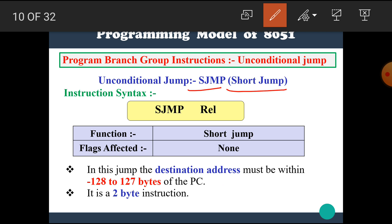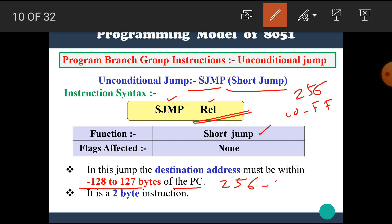The next instruction is SJMP, short jump. Its syntax is SJMP relative, where the relative word shows the relative address within the range 00 to FFH — that is, within 256 bytes. Its function is short jump. The destination address must be within minus 128 to plus 127 bytes of the PC. It is a 2-byte instruction.